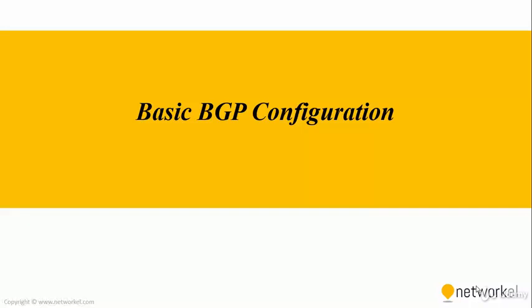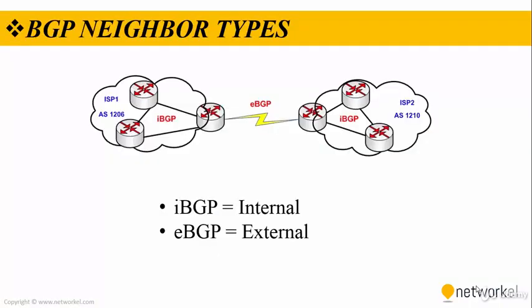In this section, we are going to take a look at the basic BGP configuration. The BGP adjacencies can be within the same autonomous system or between different AS. Neighbors in the same AS are called IBGP neighbors, and neighbors in different autonomous systems are called EBGP neighbors. In BGP, neighbors do not have to be directly connected.